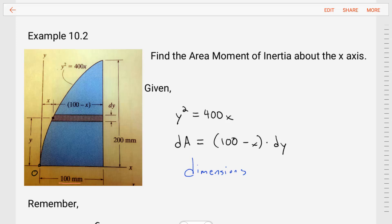This is example 10.2 coming from Hibbler's Statics book, where we're asked to find the area moment of inertia about the x-axis.